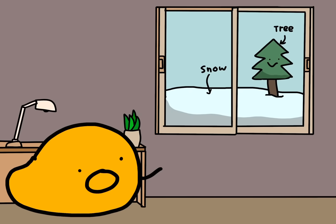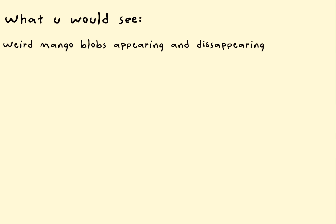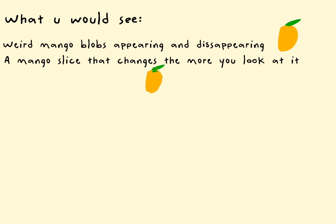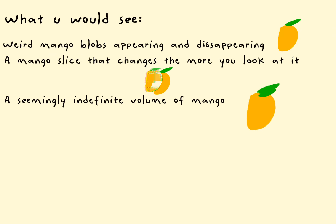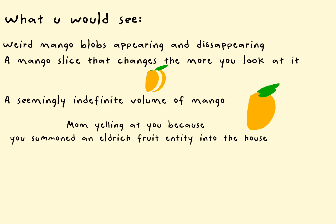In conclusion, if you were to actually open a packet of seven-dimensional dried mangoes, here's what you would see: one, weird mango blobs appearing and disappearing; two, a mango slice that changes the more you look at it; three, a seemingly indefinite volume of mango; and four, mum yelling at you because you summoned an eldritch fruit entity into the house.